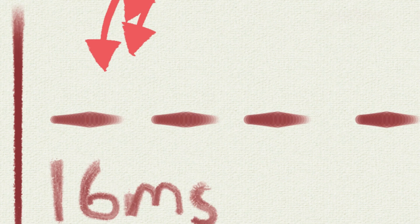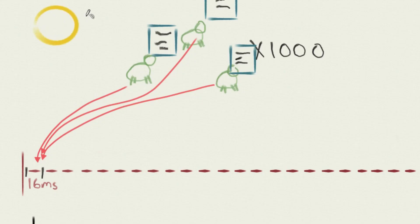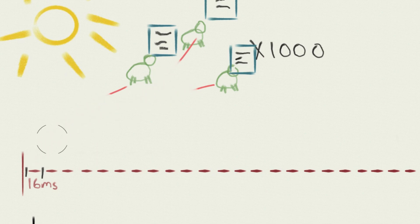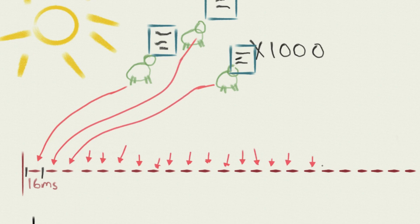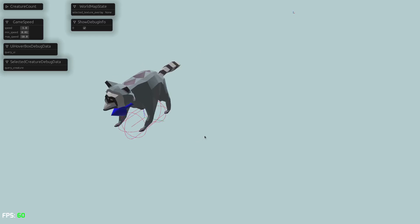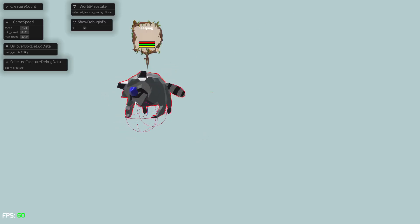Having to run hundreds or thousands of life codes with potentially slow execution would not turn out great. To solve this, I let every creature take its turn in the sun — each creature's life code gets a slot at which it executes. This spreads the compute evenly across all frames to avoid frame spikes.